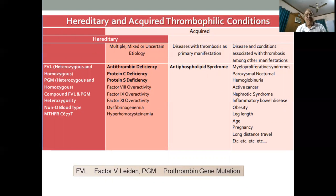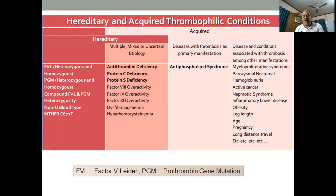There are different types of thrombophilic conditions, which may be hereditary or acquired. In the hereditary group: factor V Leiden, prothrombin gene mutation (heterozygous or homozygous), antithrombin deficiency, protein C and protein S deficiency, factor 8, factor 9, factor 11 overactivity, hyperhomocysteinemia, or dysfibrinogenemia. In the acquired group, the commonest is antiphospholipid syndrome, but others include cancer, myeloproliferative disorder, paroxysmal nocturnal hemoglobinuria, nephrotic syndrome, and inflammatory bowel disease — all of which can produce acquired thrombophilia.